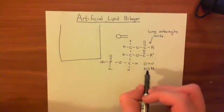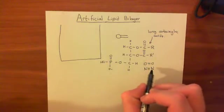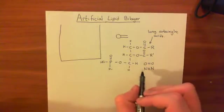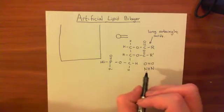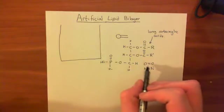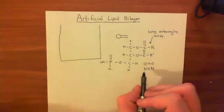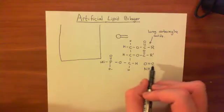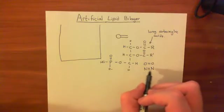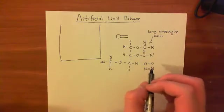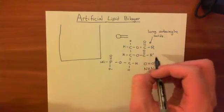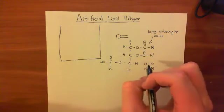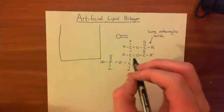In air, 79% is nitrogen and approximately 21% is oxygen. These molecules are non-polar — simply by symmetry, they cannot be polar because they have the same atom on either end of the bond. So the long-chain carboxylic acid tails interact far more favorably with these air molecules than they do with water molecules.